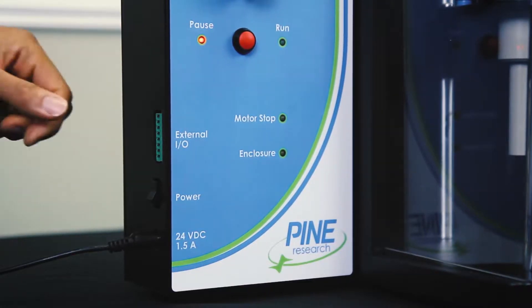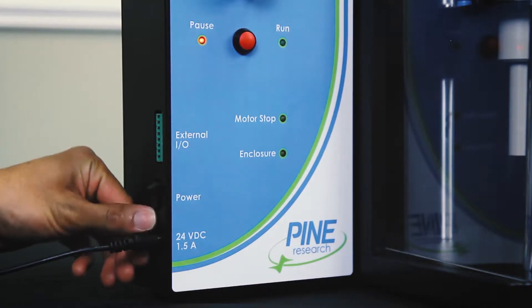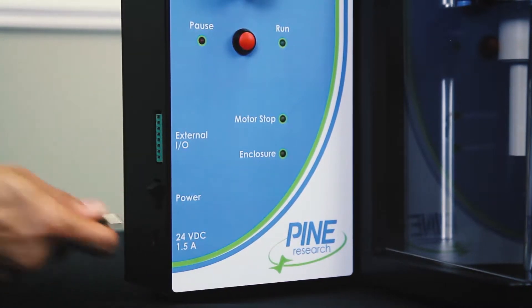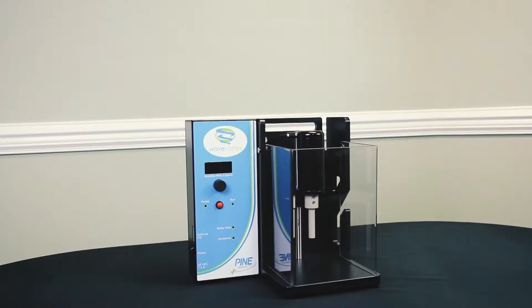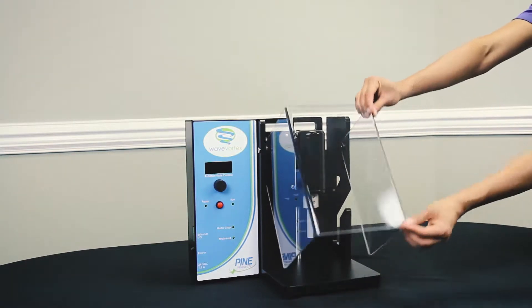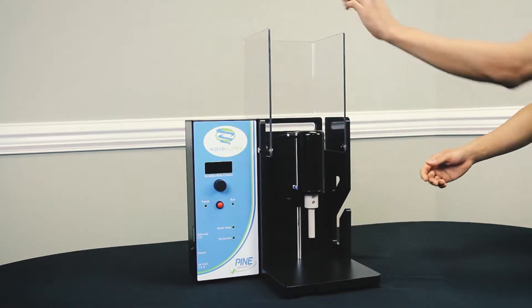First, make sure the wave vortex is turned off. It's easier to work with the enclosure window lifted and the motor unit positioned at the top of the support rod.